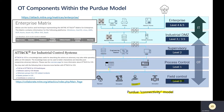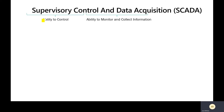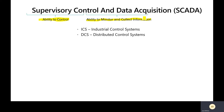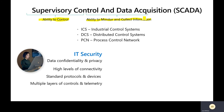Another term you'll hear is SCADA — supervisory control and data acquisition. As the term implies, the first component is the ability to control the network, and the next is the ability to monitor and collect information. Other terms you may hear include ICS (industrial control systems), distributed control systems spread out over a plant or factory, and PCN for process control network. These are all important terms, and be aware you may not even get agreement on the right term depending on which department you're talking to.